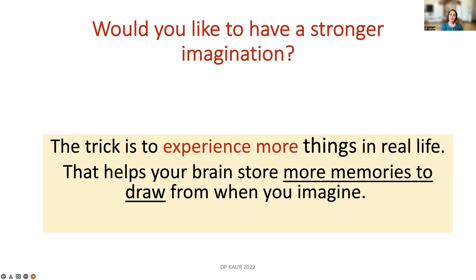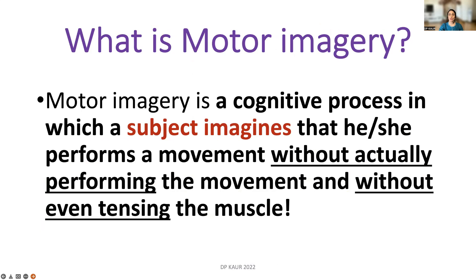What is our target? We are aiming to improve our physical abilities — so why not remember those days when we were physically absolutely fine? Motor imagery is a cognitive process, meaning many brain neural networks and brain areas are involved, in which the subject imagines performing a movement, but without actually performing it and without tensing the muscle. You simply stay relaxed and imagine the movement, which will be taught to you in a graded manner.